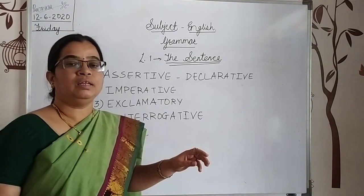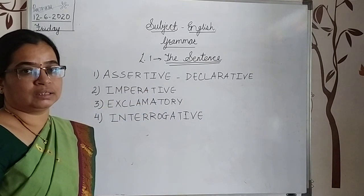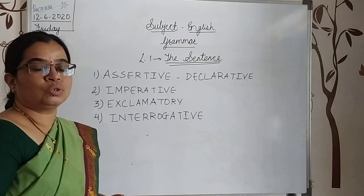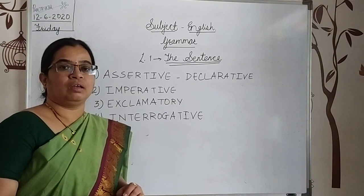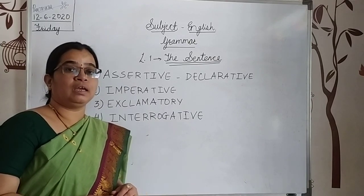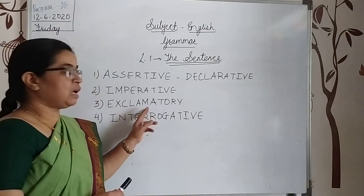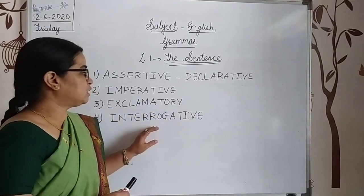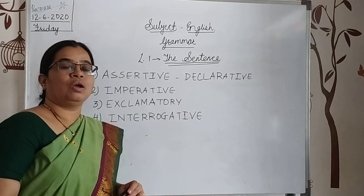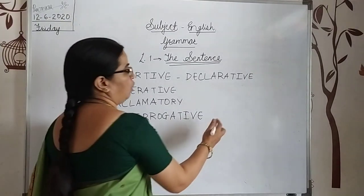The third type is the exclamatory sentence. When you want to show a strong feeling — 'oh' when you are sad, 'wow' when you see something amazing — those sentences are exclamatory. The fourth type is the interrogative sentence, which asks questions. It may be a WH question or a yes/no type question.